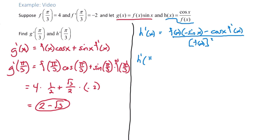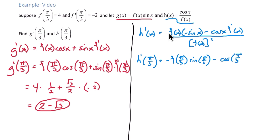We evaluate h prime at π/3 by replacing all x's with π/3. I'll pull the negative out front to avoid confusion. So we have: negative f of π/3 times sine of π/3, minus cosine of π/3 times f prime of π/3, all over f of π/3 squared. The first term: f of π/3 is given as 4.